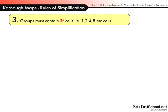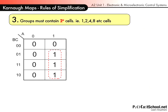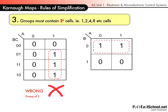The third rule is that you cannot have, say, three cells grouped. It must be of the order of two to the N. In other words, one, two, four, eight cells. So you can't group a three like that. That's definitely wrong. If you wanted to do that, then you'd have to group a two and a one separately.